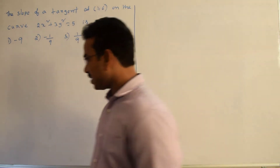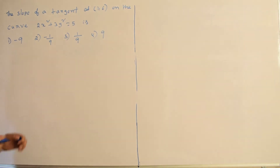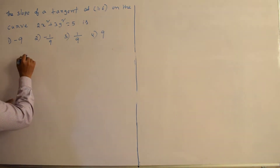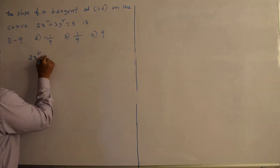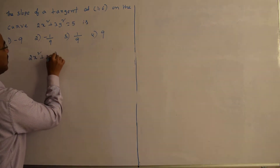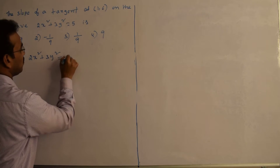First, let me write the given curve. The given curve is 2x² plus 3y² equals 5.